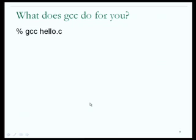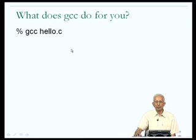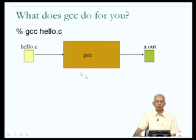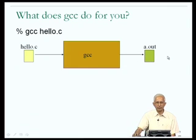What does GCC do for you? Those of you who have used GCC on a Linux or Unix system will be familiar with the fact that at the command prompt — the percent sign — you execute the program GCC providing hello.c as the input. hello.c is the file which contains the program you have written in the C language, and GCC produces as output a file called a.out. The default name of the output produced by GCC is a.out.